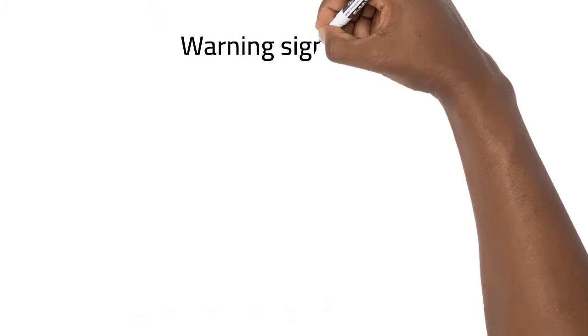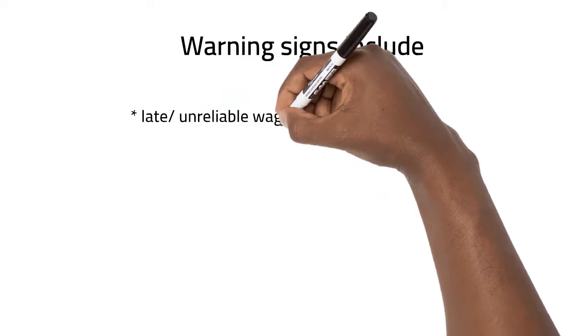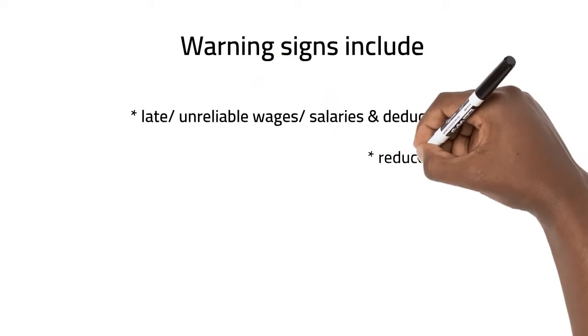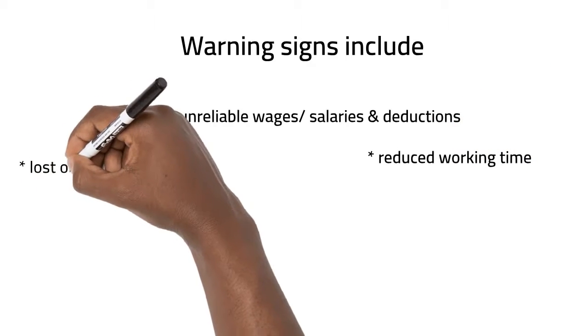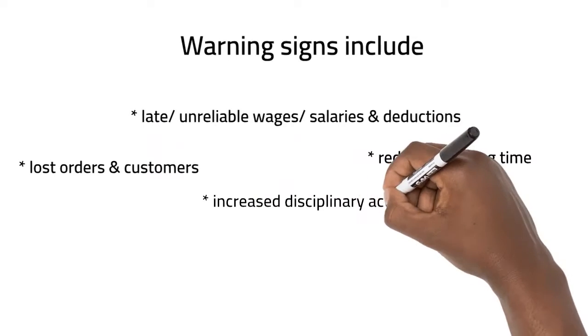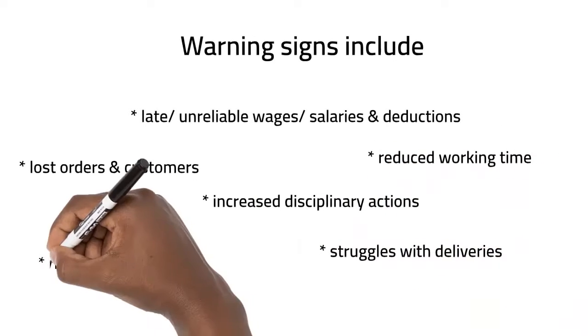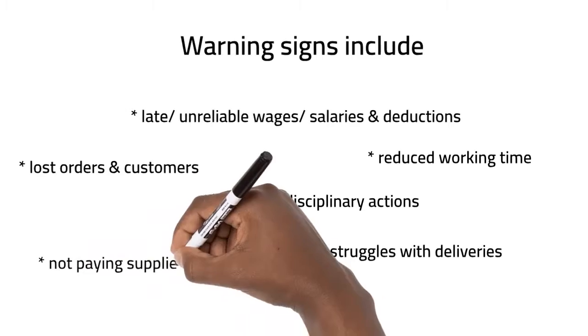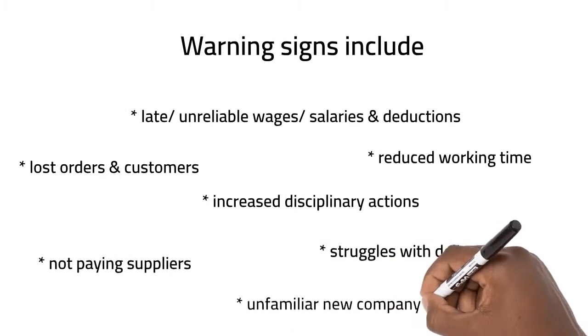Warning signs include things like being paid your salaries or wages late, not being paid your UIF, working short time, losing customers, more disciplinary measures and punishment at work, problems with deliveries to customers, having unfamiliar new advisers and experts at the workplace.